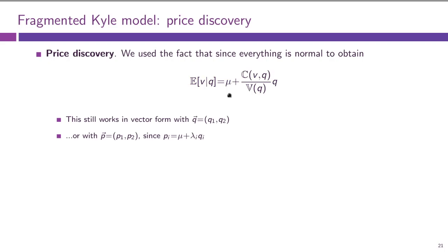This expression also holds in vector form. We now want to find the distribution of V conditional on what happens in the two markets — conditional on the information revealed in both markets. We can see it as a vector Q1, Q2. This is equivalently the same as conditioning on the vector of prices P1 and P2 that happened in the two markets, since prices are linear in quantities so they have a one-to-one correspondence.